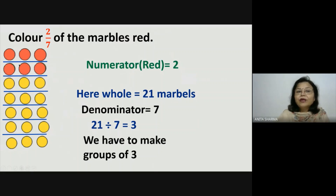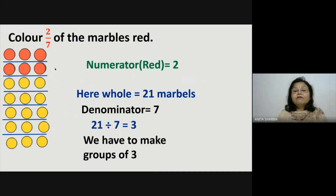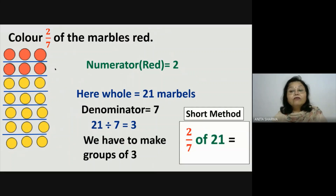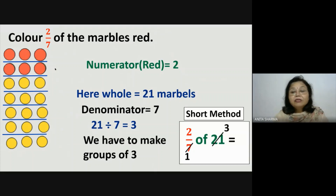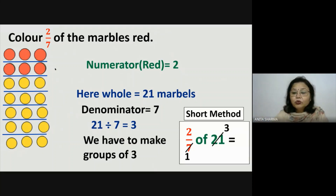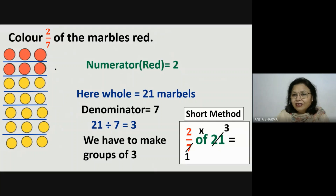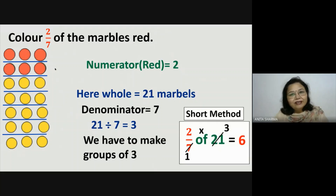Means humne 6 marbles ko red karna padega. Lekin ab humne jo itni understanding se samjha hai, we can find out this answer in short way also. The short method says 2 seventh of 21 — humne 21 ko seven parts mein divide karna hai. So seven ones are seven and seven threes are 21, means 3 3 ke groups banane hain, 7 groups of 3. So 2 groups of 3 humne red karne the, means 2 times 3 which is equal to 6. So hum 6 marbles ko red karenge.